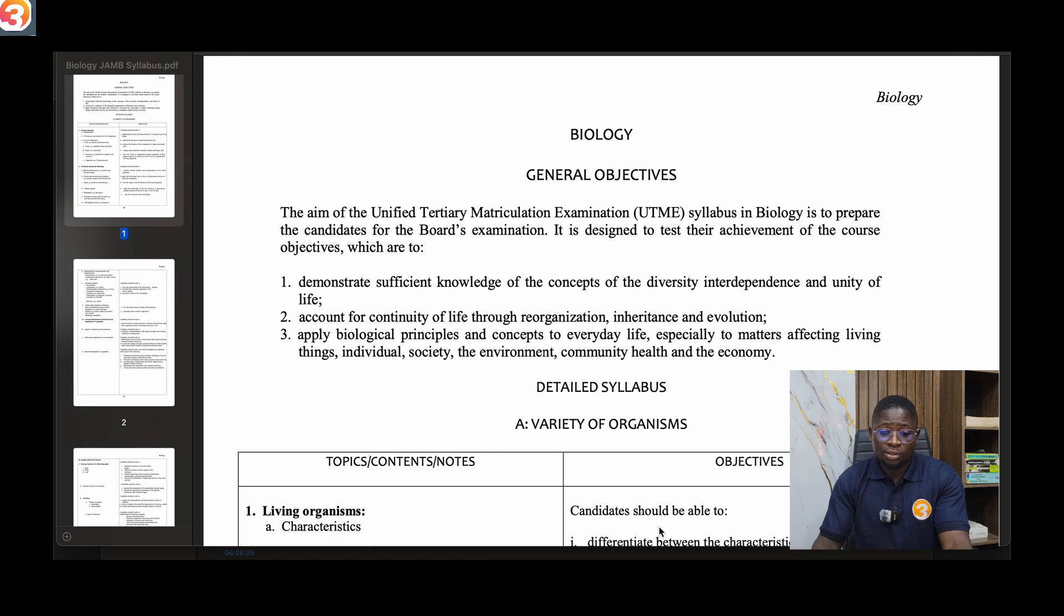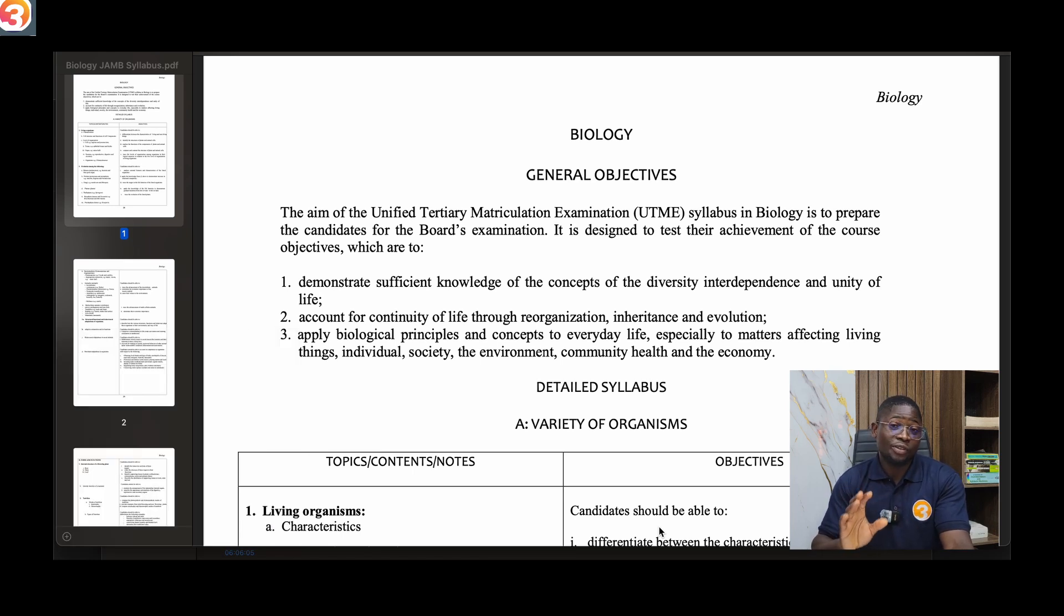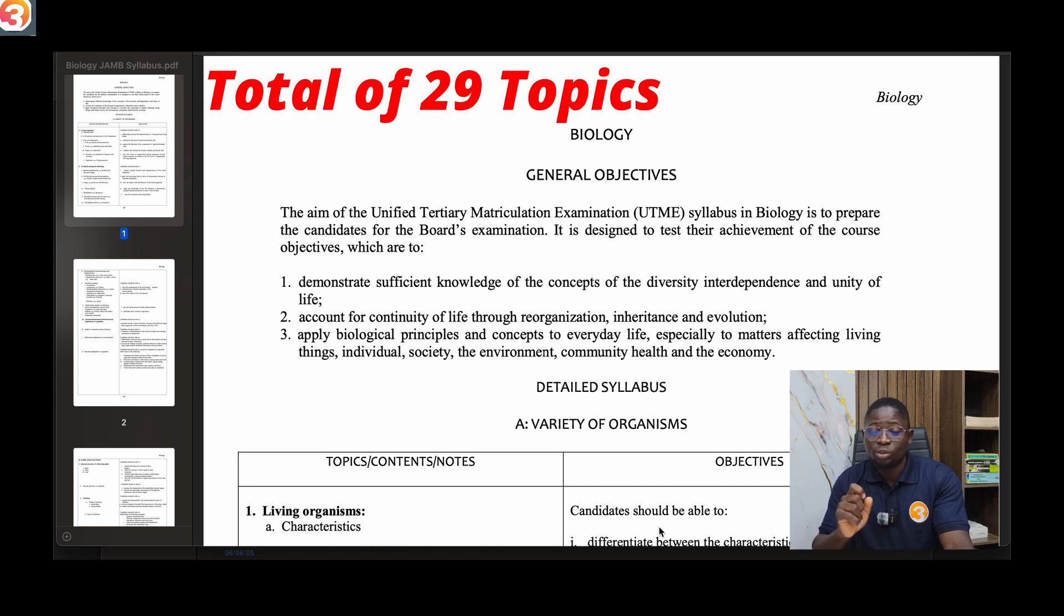Today I'm going to look at the biology syllabus, so ensure you like this video, share it to your profile so that other people can also see this video, and don't forget to subscribe to our YouTube channel. If you are picking biology as your subject in your subject combination, you are writing 29 topics. Take note of that - a total of 29 topics in your JAM biology.